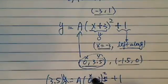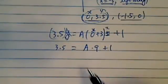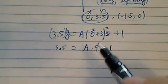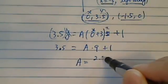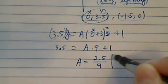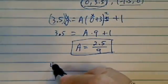A, I don't know, x is 0. So this is A times 9 plus 1. So 3.5 is on this side. And then I have A is equal to 2.5 divided by 9. So here's my coefficient.